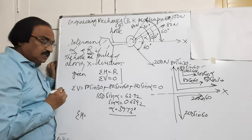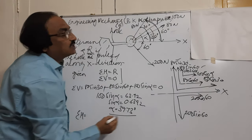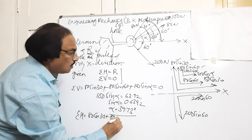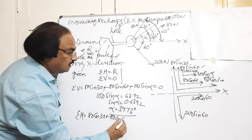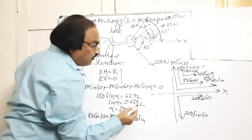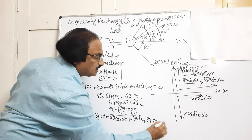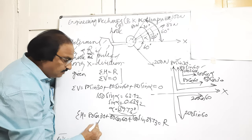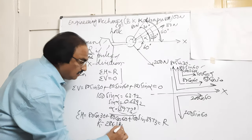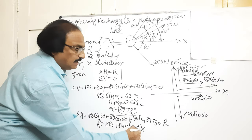Now to find the resultant, resolve the forces horizontally. Sigma H = 80 cos 30 + 80 cos 60 + 100 cos alpha + 200 cos 60. Substituting alpha = 39.73 degrees and simplifying, the resultant equals 286.18 Newton along the x direction.